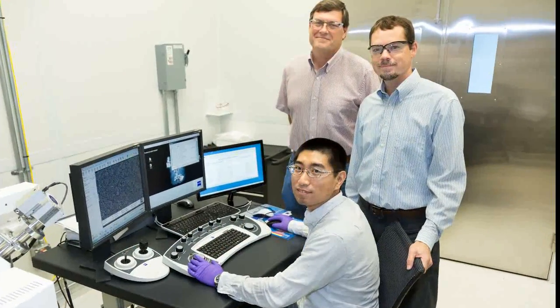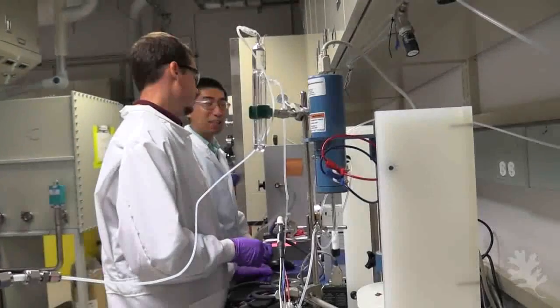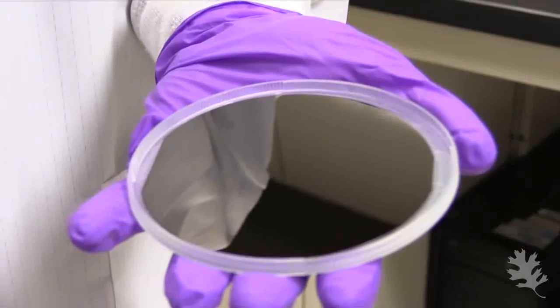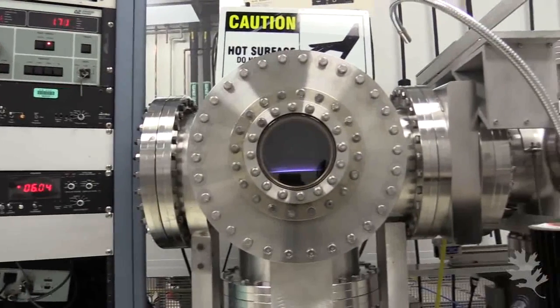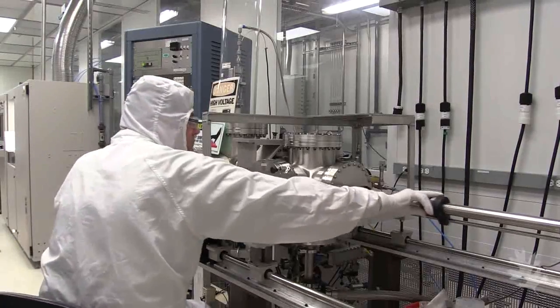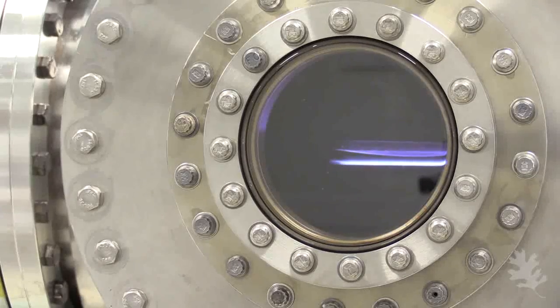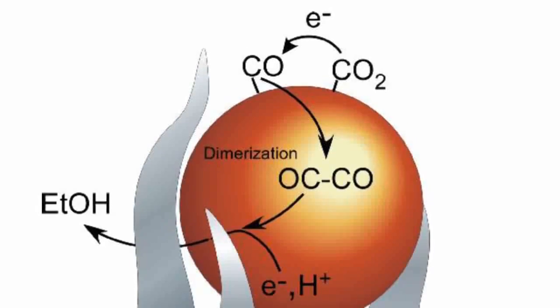The team used a catalyst made of carbon, copper and nitrogen and applied voltage to trigger a complicated chemical reaction that essentially reverses the combustion process. With the help of the nanotechnology-based catalyst, which contains multiple reaction sites, the solution of carbon dioxide dissolved in water turned into ethanol with a yield of 63 percent.